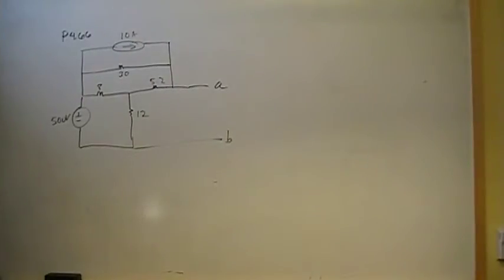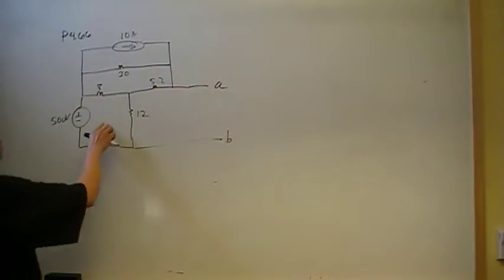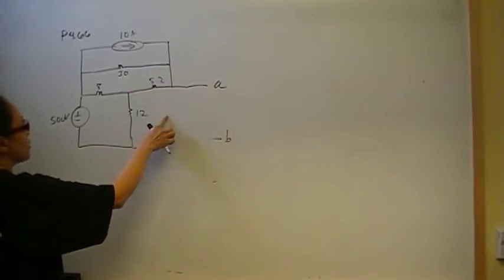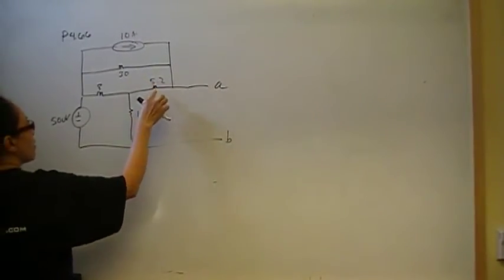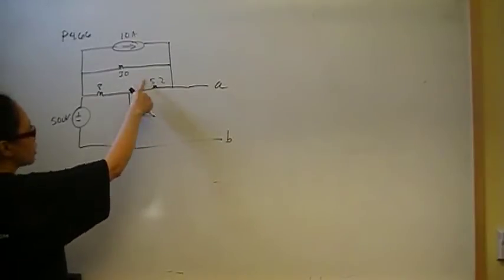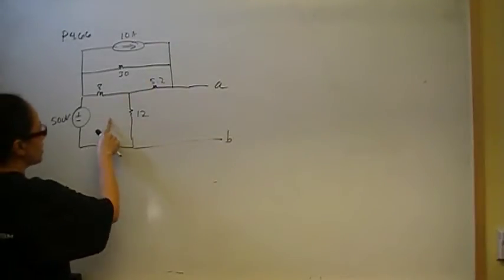You can use node voltage or mesh method to solve this. I happen to use the mesh method, just because I prefer it. So basically, whatever this mesh current is, my V-Thevenin is going to be 5.2 ohms times that mesh current, and then 12 ohms times that mesh current.